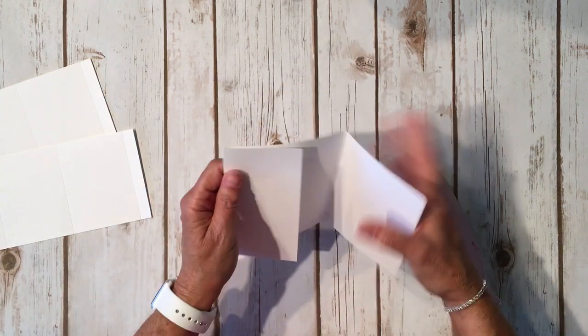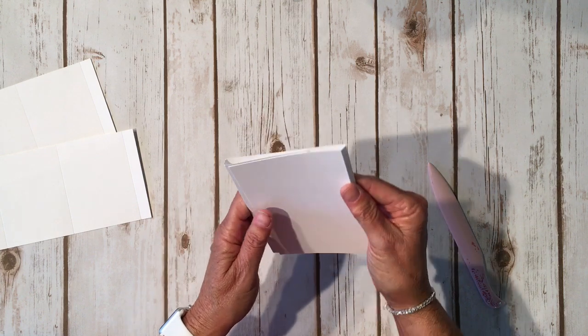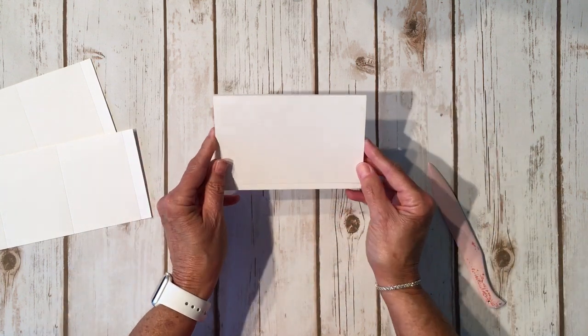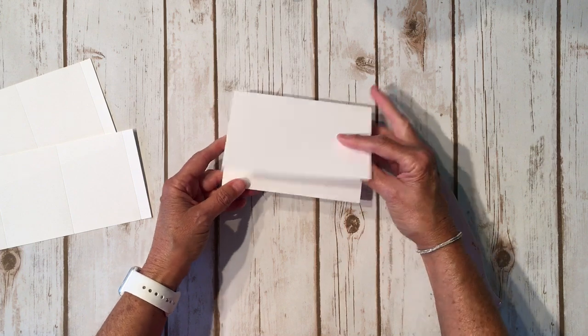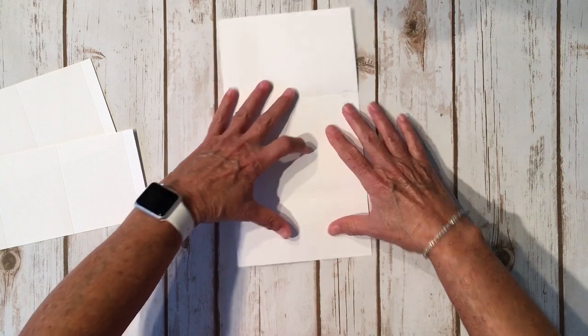Okay, so that's basically the base of our little book, or our little wallet thingy, whatever we want to call it. It's super cute. So this is the front, and then it's going to open like this and open like this, and then we're going to make our little pullouts that go on the inside.